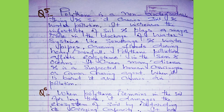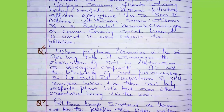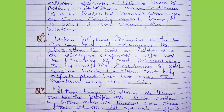Question number six: How is soil affected by polythene? When polythene remains in the soil for a long time, it damages the ecosystem of soil by retarding its carrying capacity. It has the property of non-permeability, meaning nothing passes through it, so it cuts off respiration of the soil system, which in turn not only affects plant life but also other creatures living in the soil.